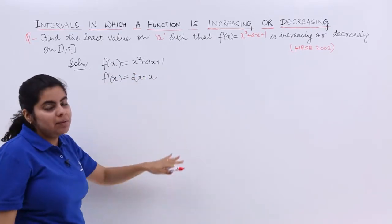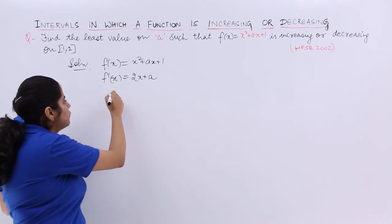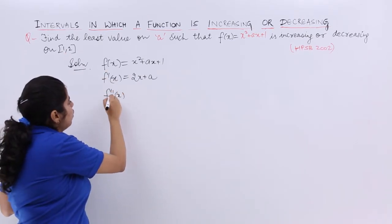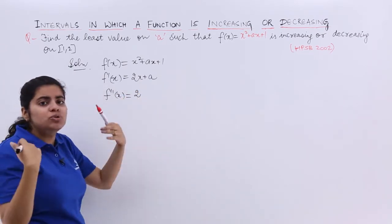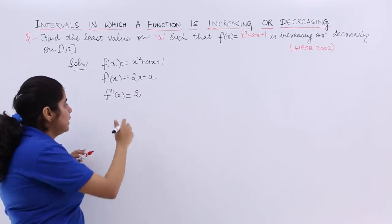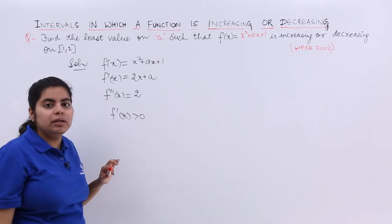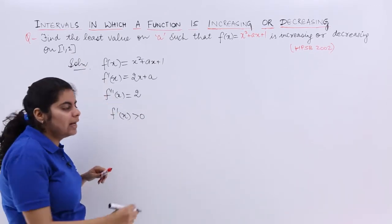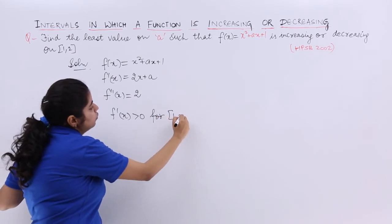Now, what does 2x + a mean? When I talk about this interval [1, 2], let's first find the second derivative to understand more. It gives me only 2, which means it's always greater than 0. That means f'(x) is going to be greater than 0. It's going to be greater than 0 for the interval 1 to 2.